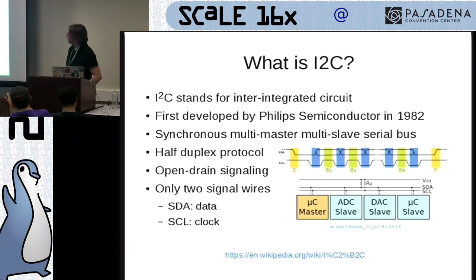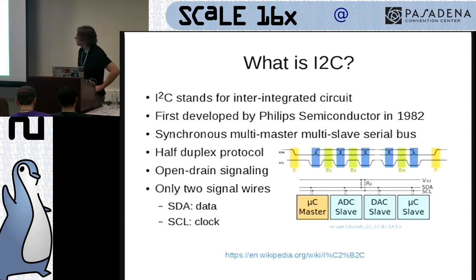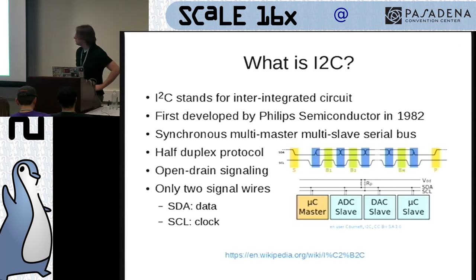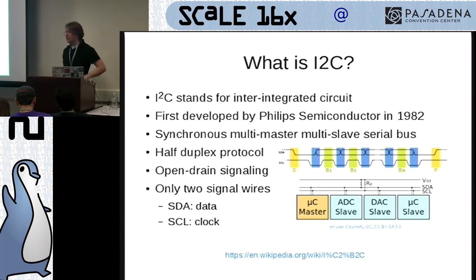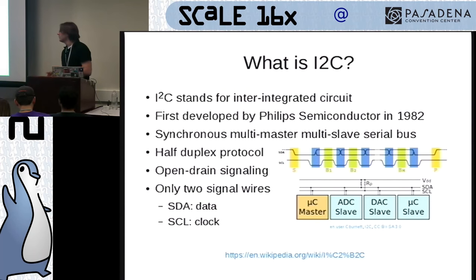I2C stands for Inter-Integrated Circuit — quite a mouthful. It was built in 1982 by Philips, so it's been around a long time. It's a synchronous, multi-master, multi-slave interface — not typical, but possible because of the type of signaling it uses. It's half-duplex, meaning it can't communicate in both directions simultaneously — that's where it differs from SPI. It uses open-drain signaling, so if two devices try to be masters simultaneously, it won't cause electrical issues; there's arbitration to determine which master wins.